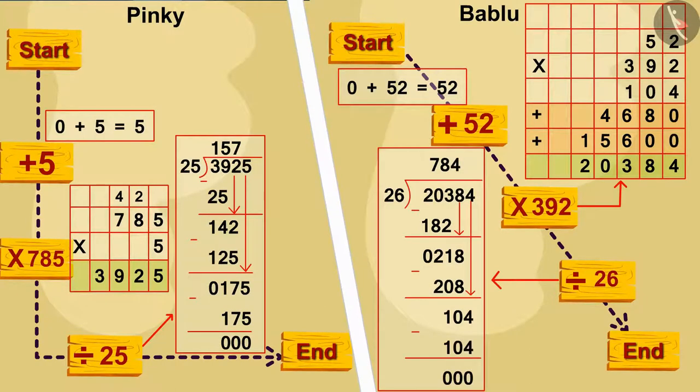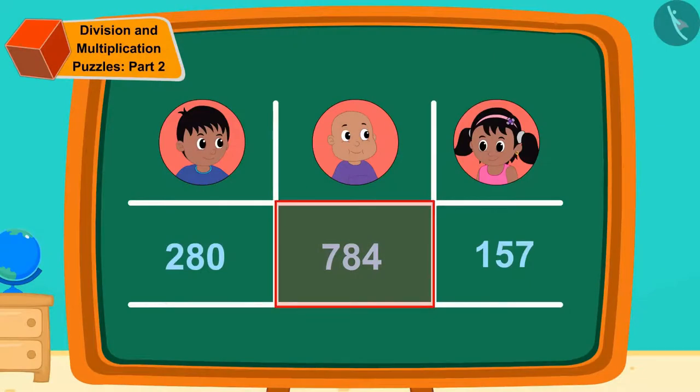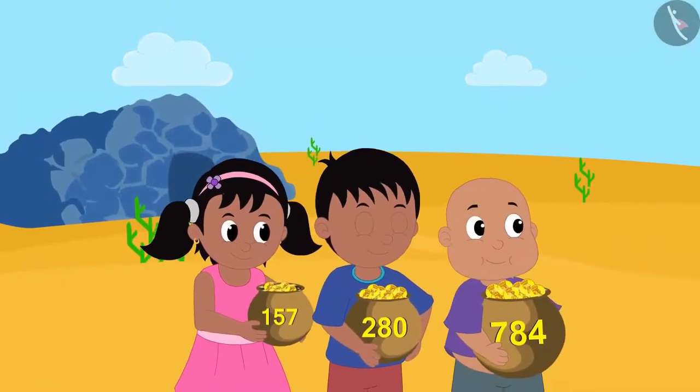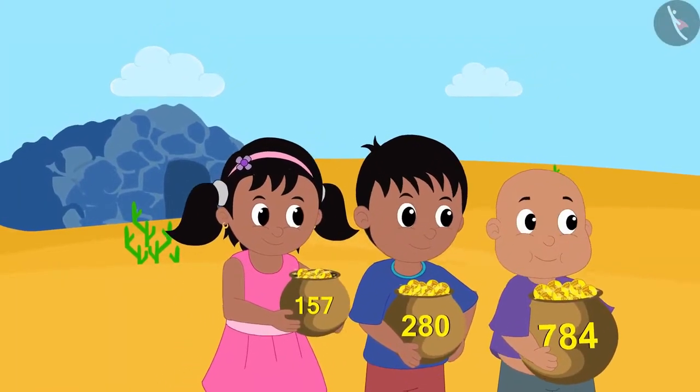Well done, children. You have solved it absolutely correctly. Bablu got the most: 784 gold coins. The three friends happily returned home with their treasures.